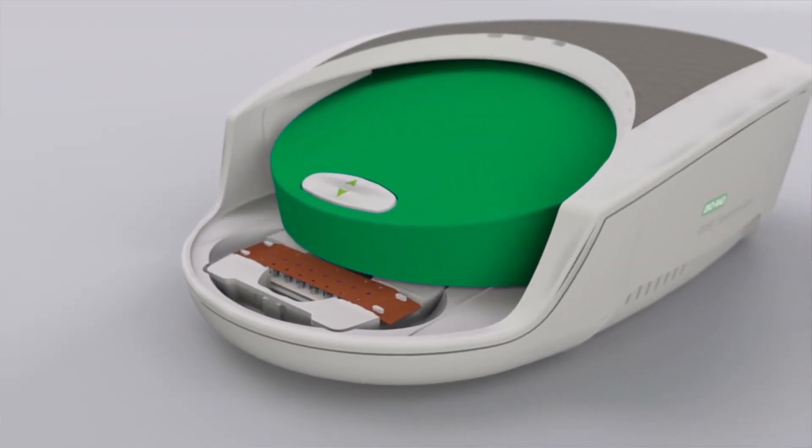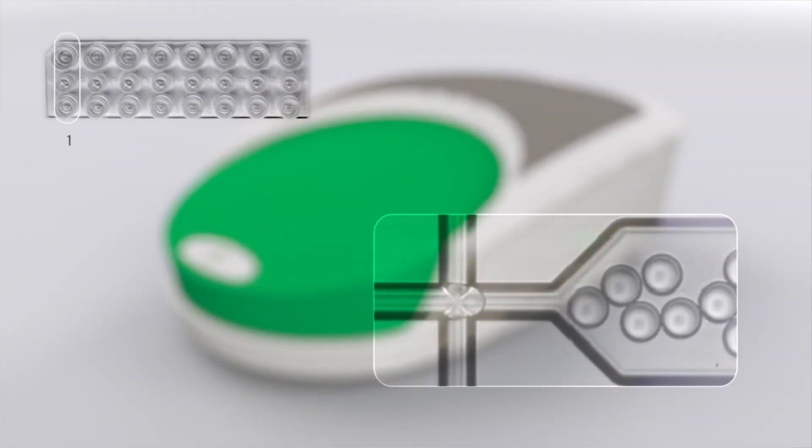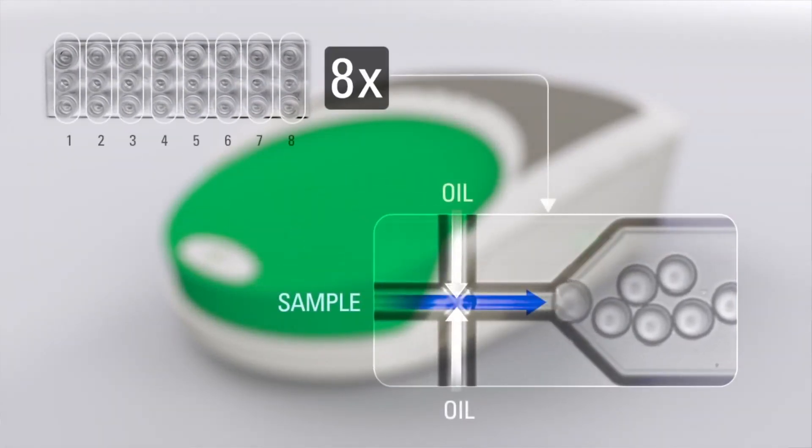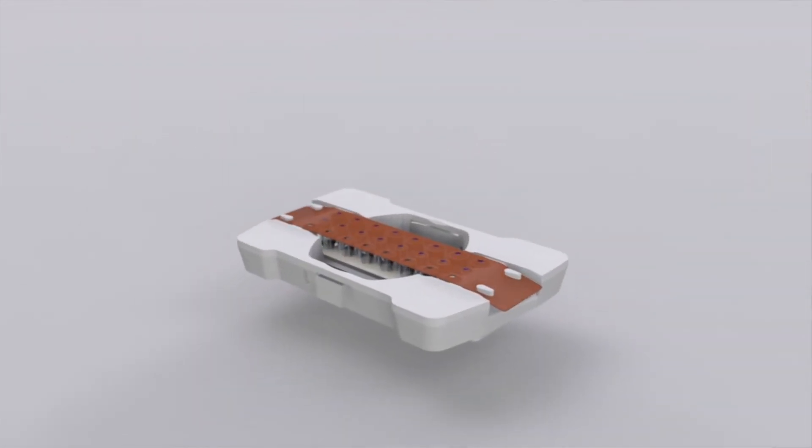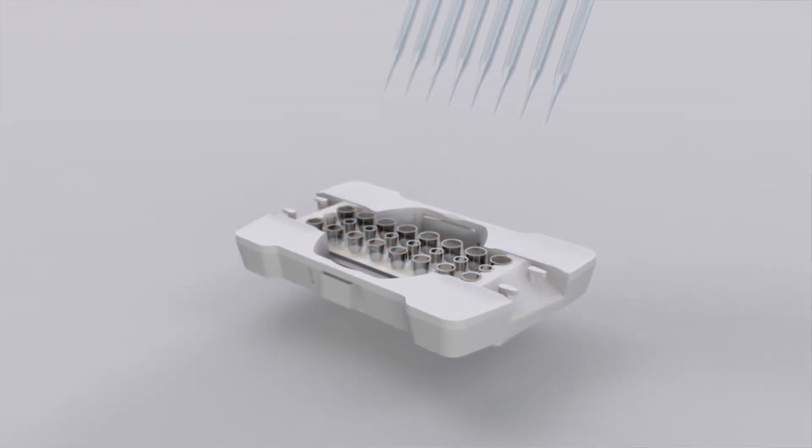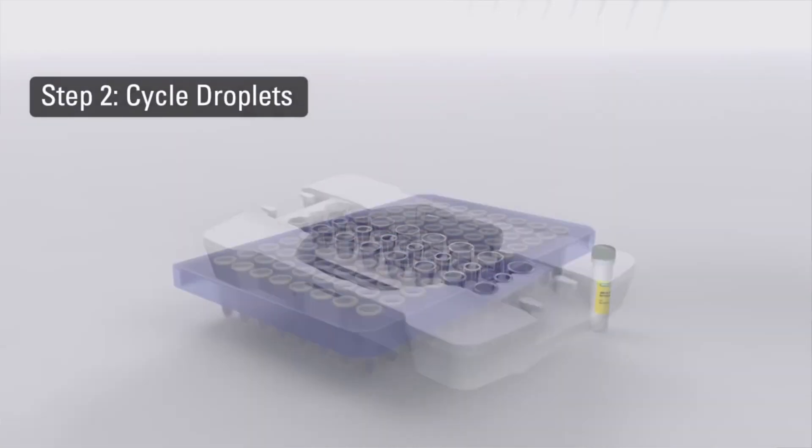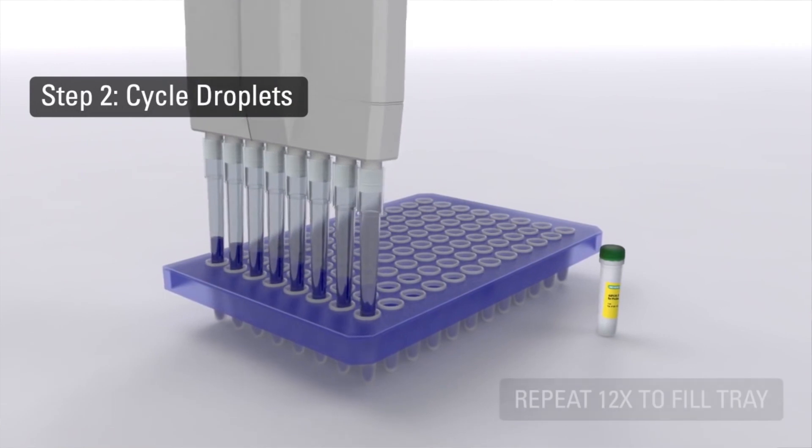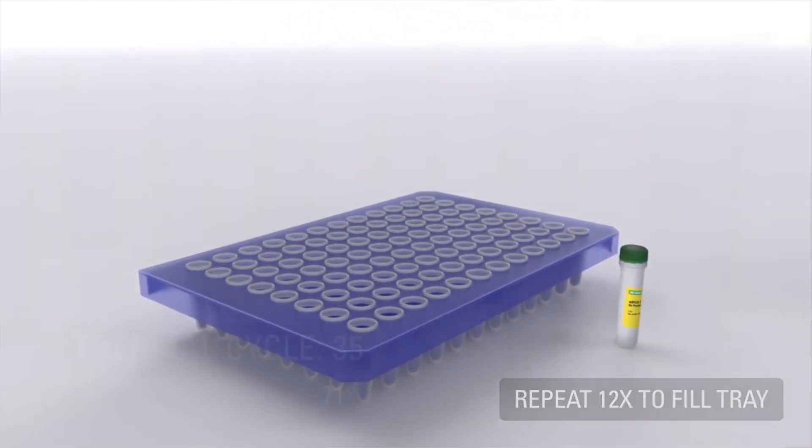So the advantage that this instrument has over other machines is traditionally PCR or real-time PCR is just a single well measuring a single product. In digital PCR, it takes your sample and partitions it into 20,000 droplets. Each of these droplets is represented as a PCR reaction, so you have way more power than what you would traditionally have as a PCR.